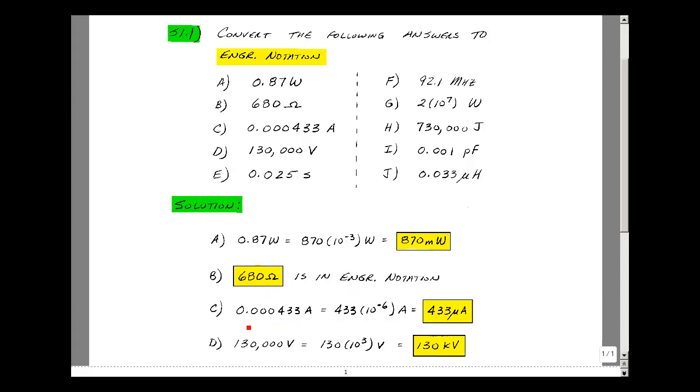0.000433, move the decimal point over three places. We're still a number less than one. We move it over three more again. We move the decimal point over six places, so we have to put 10 to the minus 6th. We have 433, and 10 to the minus 6th is micro. 433 microamps.